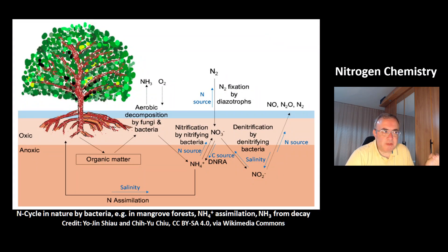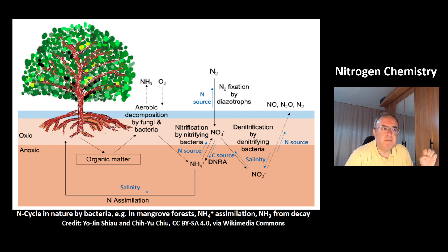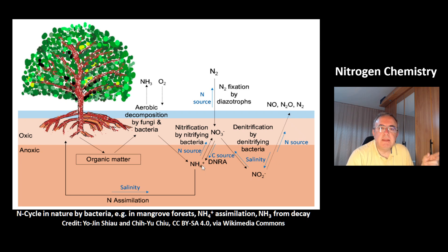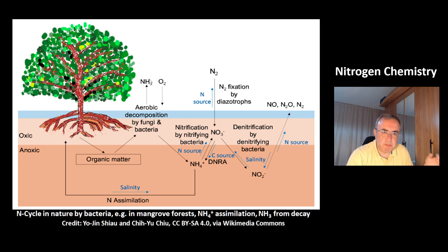This is an example of the nitrogen cycle in nature, from the mangrove forest. In this process, bacteria play a very important role. The plants are not able to assimilate nitrogen from air, but bacteria can, and that produces ammonium. Ammonium can be assimilated by plants. One decay product of decomposition processes is ammonia, which is released into the air.